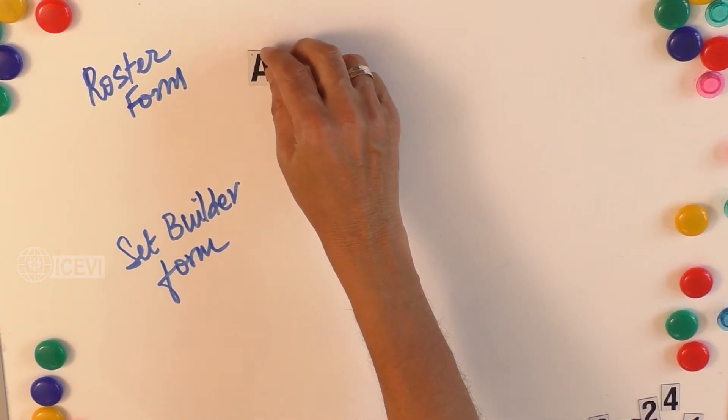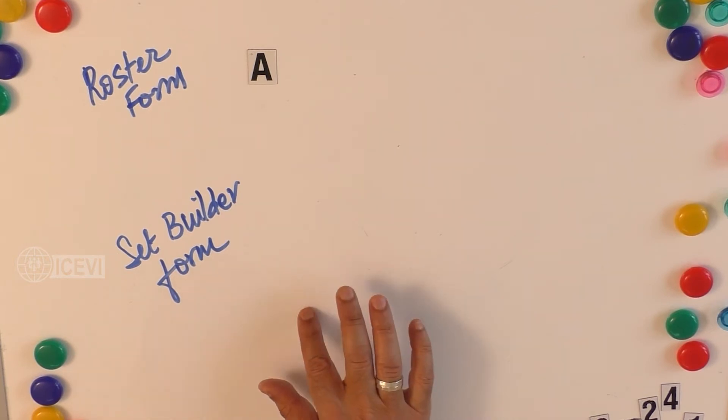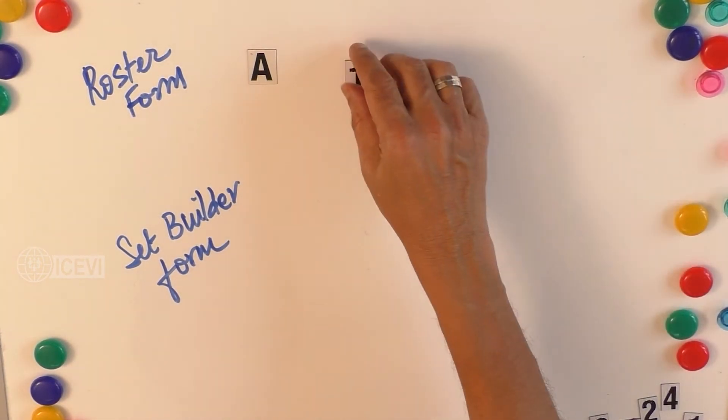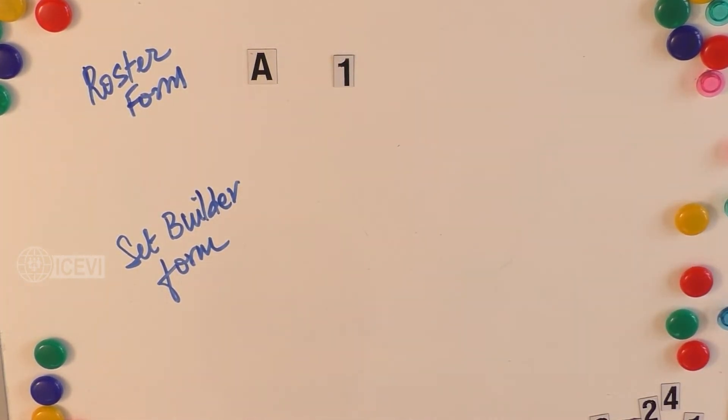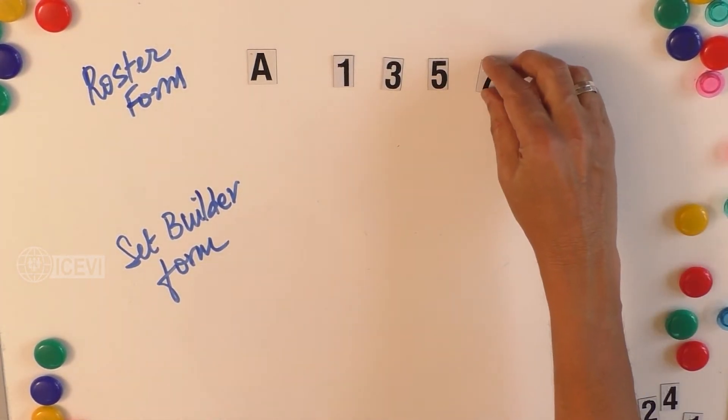When you say set A is consisting of the single digit odd numbers, the single digit odd numbers are 1, 3, 5, 7, and 9. So let us form the set 1, 3, 5, 7, and 9.